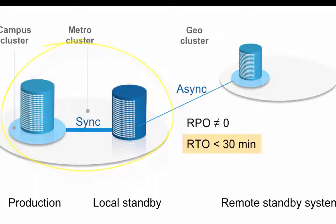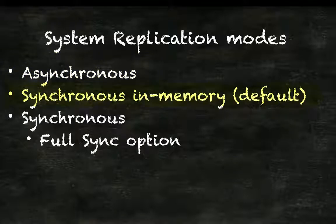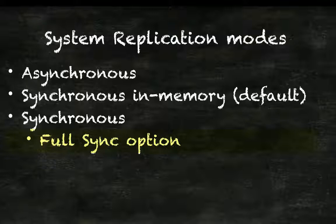The replication in the metro cluster would be synchronous, and in the geocluster — the remote standby — asynchronous. Depending on the requirements, there are three modes to choose from. Asynchronous means that the primary system sends the data to the secondary system but does not wait for the data to arrive or to be committed. Synchronous in memory is the default setting — the primary system commits the transaction after it receives a reply that the log was received by the secondary system, without requiring the data to be persisted on the secondary system, so transaction delay is shorter. The third option, synchronous, does require persistence and guarantees immediate consistency between both systems. This mode also has the full sync option, which is even more restrictive as transaction processing is suspended in case of communication failure between the primary and secondary node, guaranteeing no data loss.